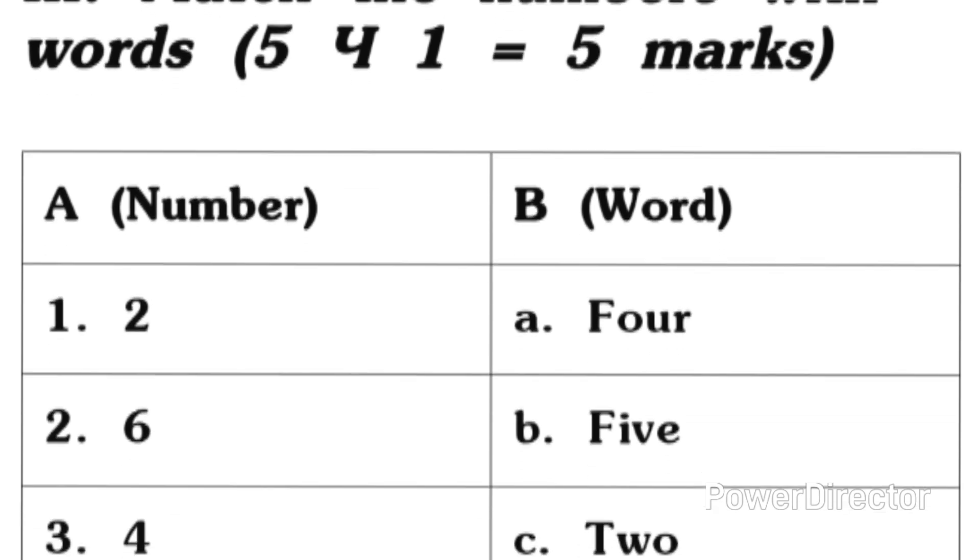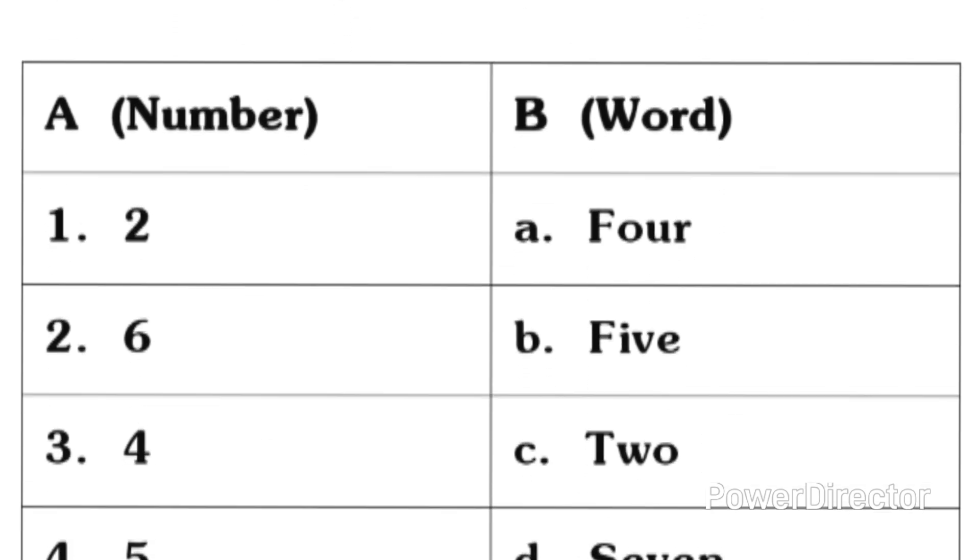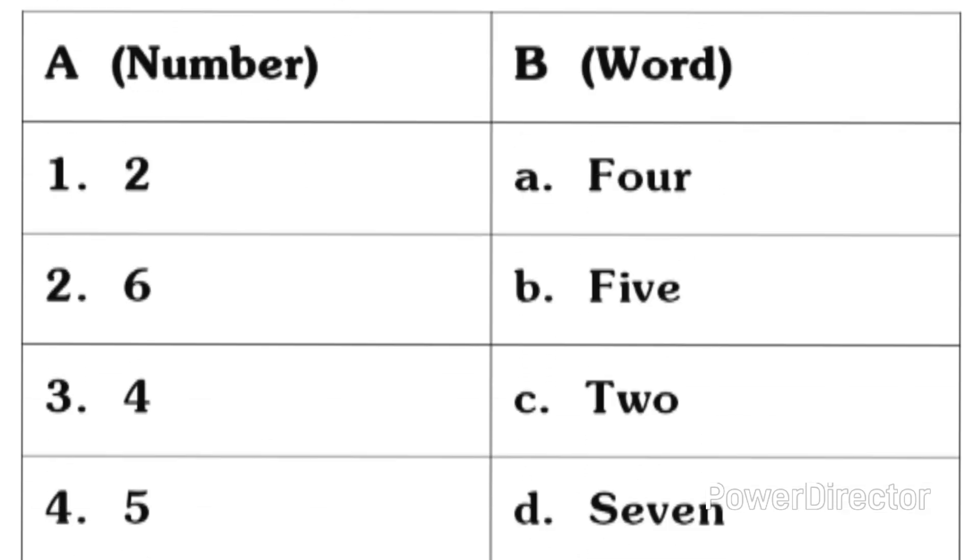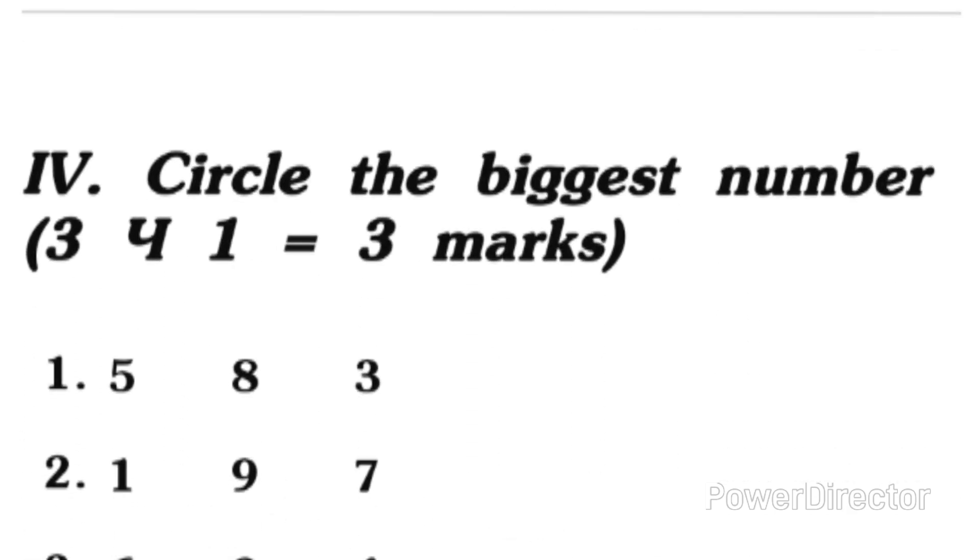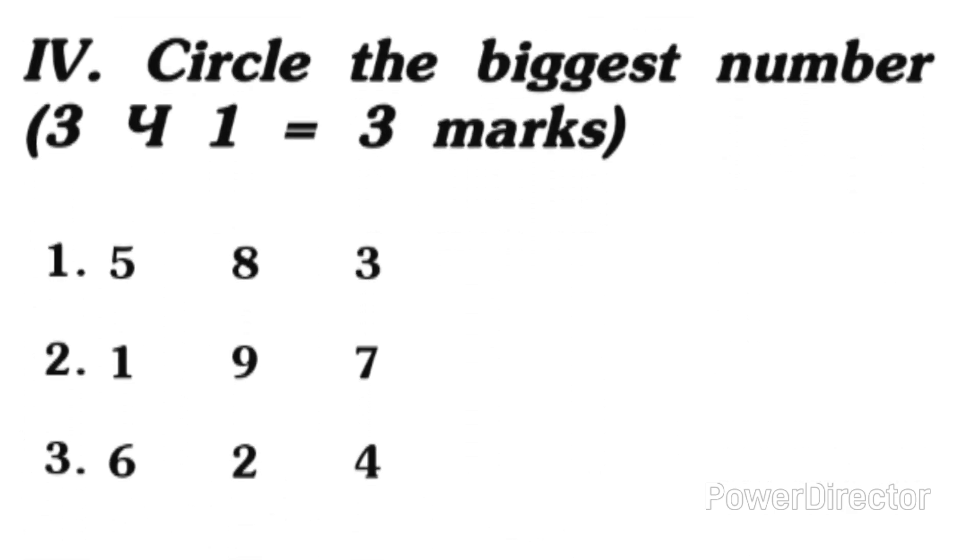You have number names here. On the left side, in column A we have numbers. In column B you have words. You need to match. Next, circle the biggest number. For each carries one mark, three questions are there.